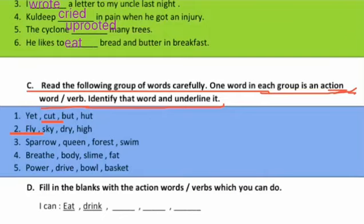Next set is: sparrow, queen, forest, and swim. 'Sparrow' to chidiya, 'queen' rani, 'forest' jungle — yeh sab noun hain. Aur 'swim' karna matlab tairna. To kriya kya ho gayi? 'Swim'.